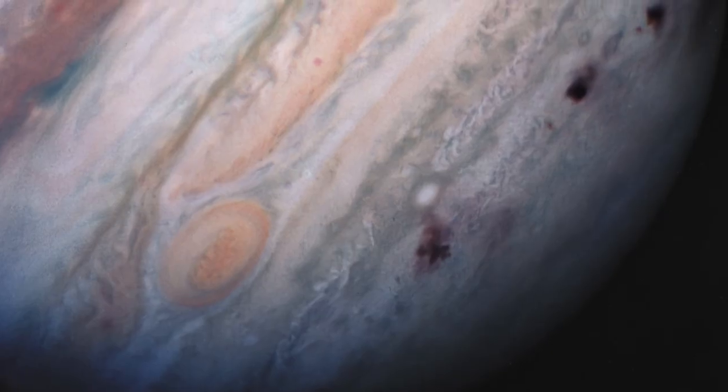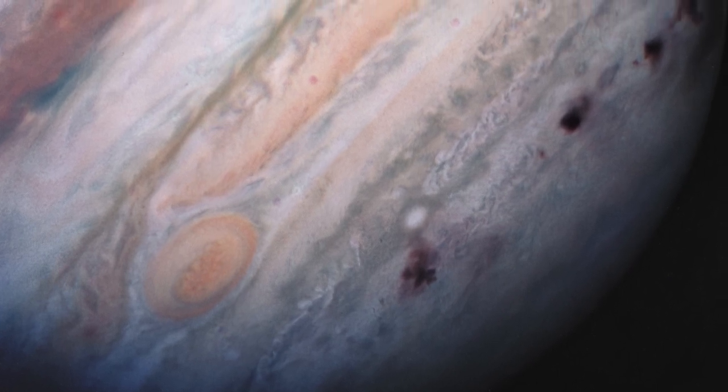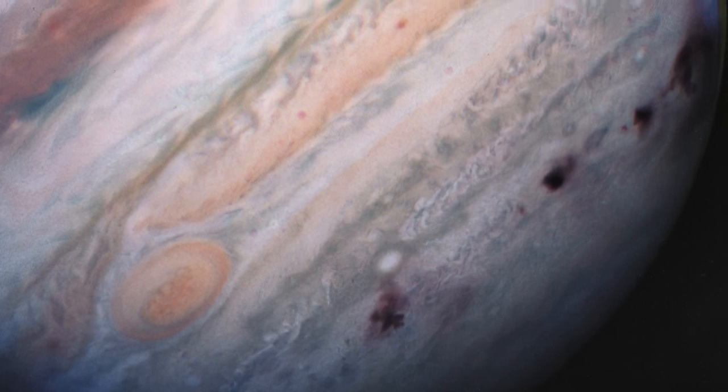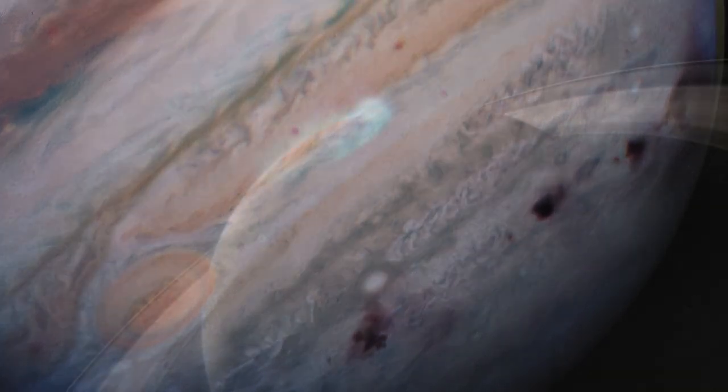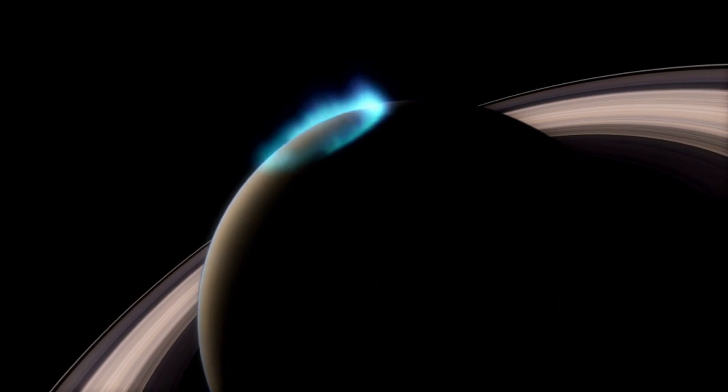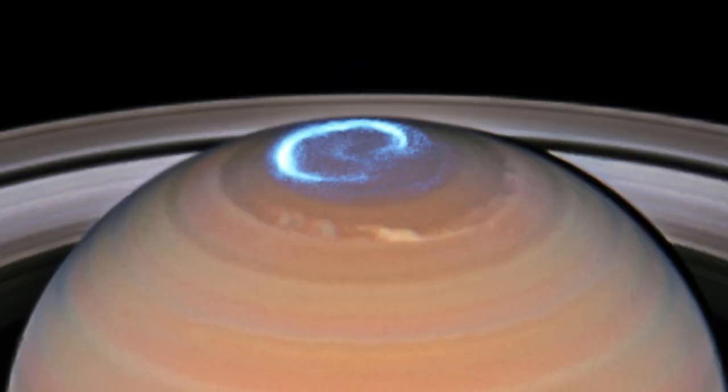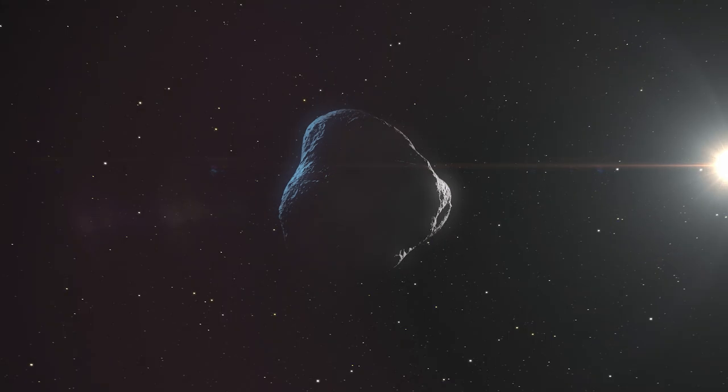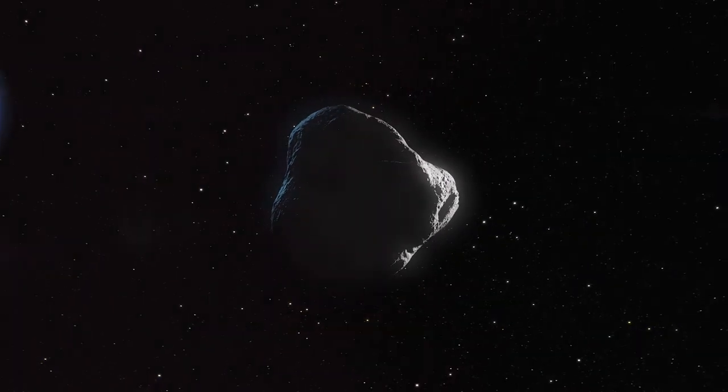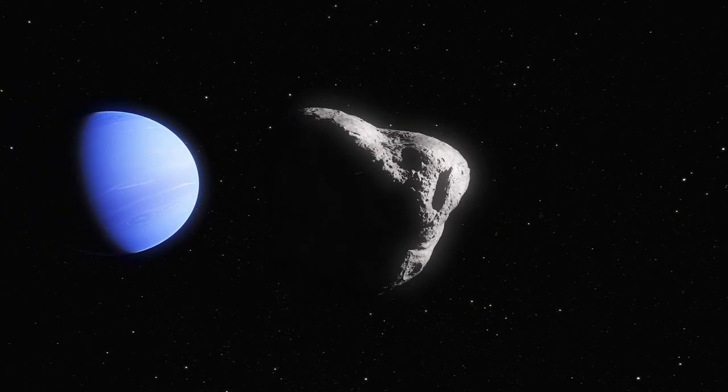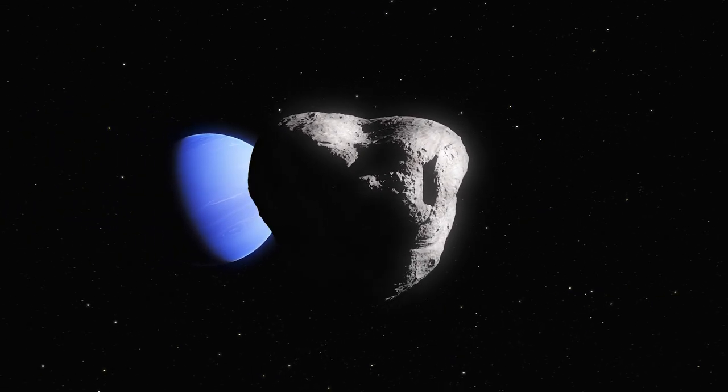Hubble has also observed the auroras on several of our solar system's planets, including Saturn and Uranus. The telescope's data were also used to study the origin of the smallest known moon orbiting the planet Neptune, known as Hippocamp.